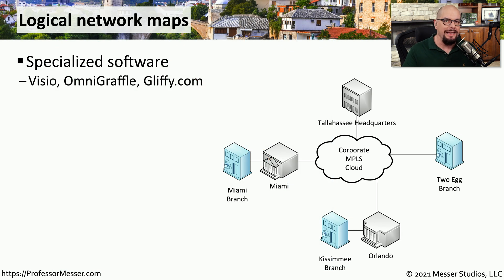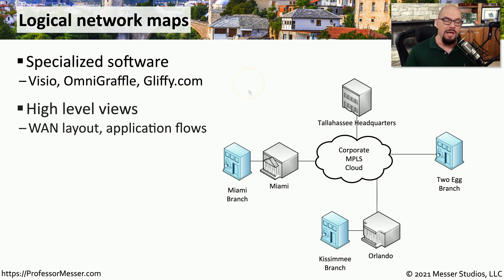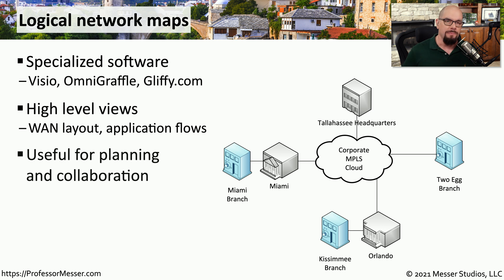Sometimes you may not need to see the direct wired connection between devices, but it would be useful to get an overall view of connectivity for the organization. Instead of having a physical network layout, you could have a logical network layout. You can usually create this using software such as Visio, OmniGraffle, or Gliffy.com. This logical network map may show you information about wide area network connections, wireless connectivity, or application flows. You might bring in a logical network map when trying to determine where to add additional access points, or where all of the connections might be for your wide area network.